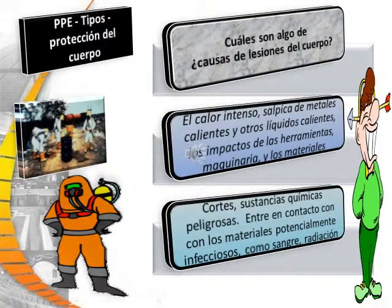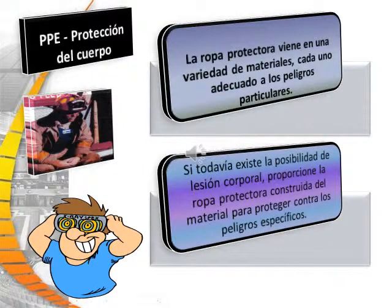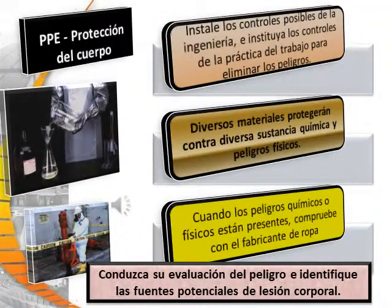What are some of the causes of body injuries? Intense heat, splashes of hot metal and other hot liquids, impacts from tools, machinery, and materials, as well as cuts, hazardous chemicals, and contact with potentially infectious materials like blood. Protective equipment comes in a variety of materials, each suited for particular hazards. If the possibility of body injuries still exists, provide protective equipment constructed of material to protect against specific hazards. Install feasible engineering controls and institute work practice controls to eliminate hazards. Conduct your hazard assessment and identify potential sources of bodily injury.